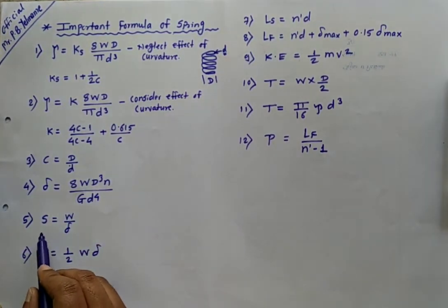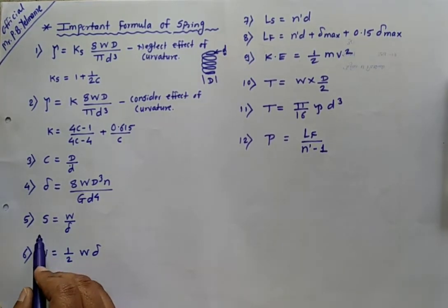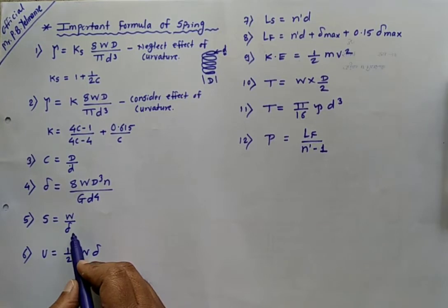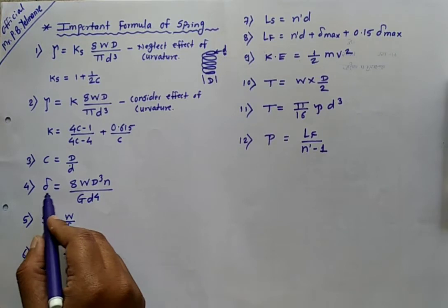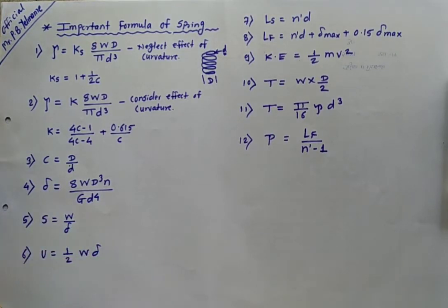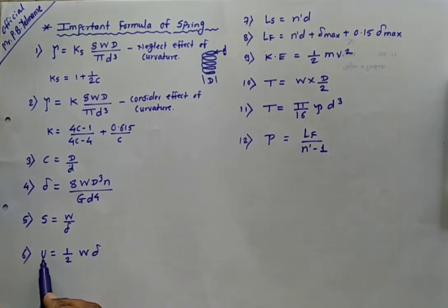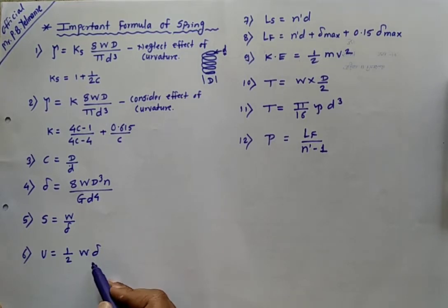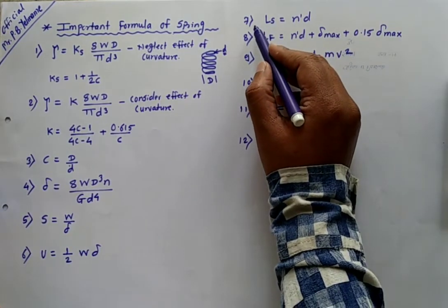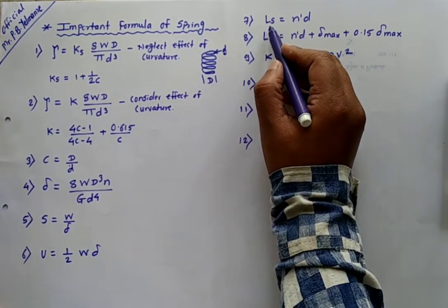Spring stiffness is calculated as S = load per unit deflection, which is W/delta. The strain energy stored in the spring is calculated as U = (1/2) × W × delta, where U is the strain energy stored, W is the load acted on the spring, and delta is the deflection of the spring.